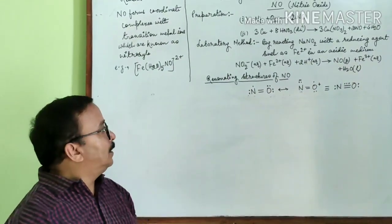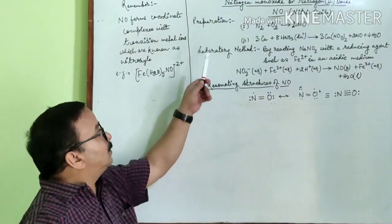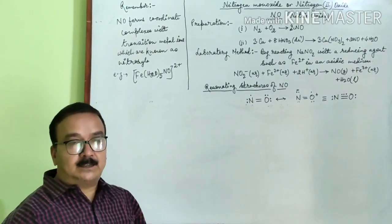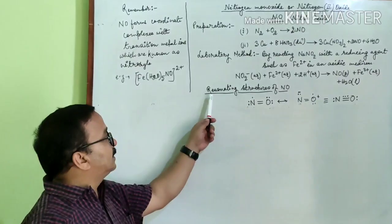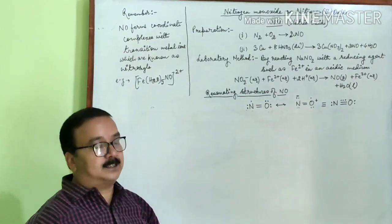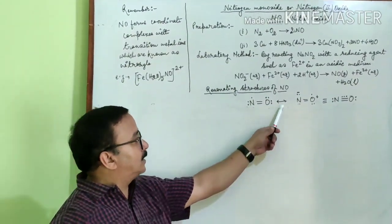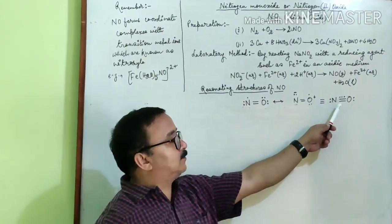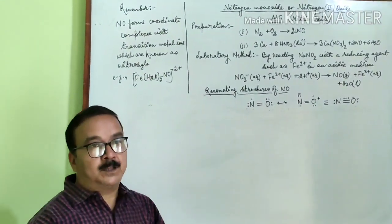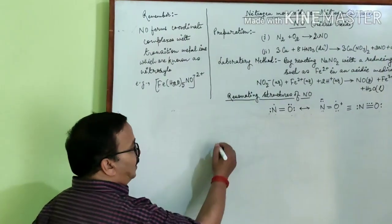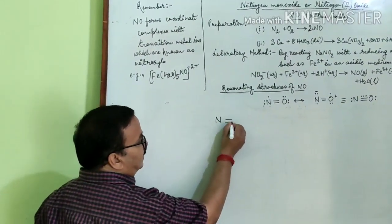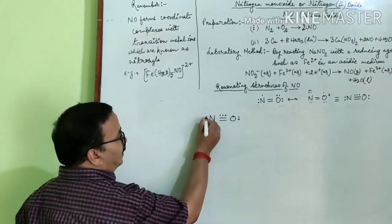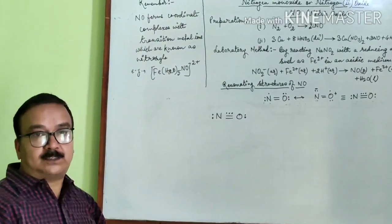Now how can nitric oxide be represented by the structure? It has different resonating structures. These are the resonating structures of nitric oxide and this one is the resonance hybrid. In the resonance hybrid we are observing that there is a 3-electron bond between nitrogen and oxygen.